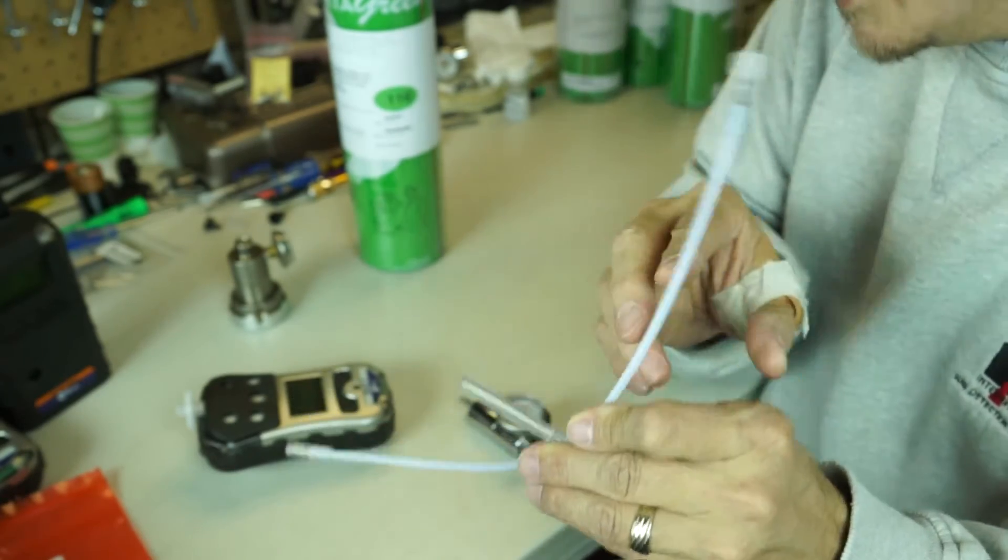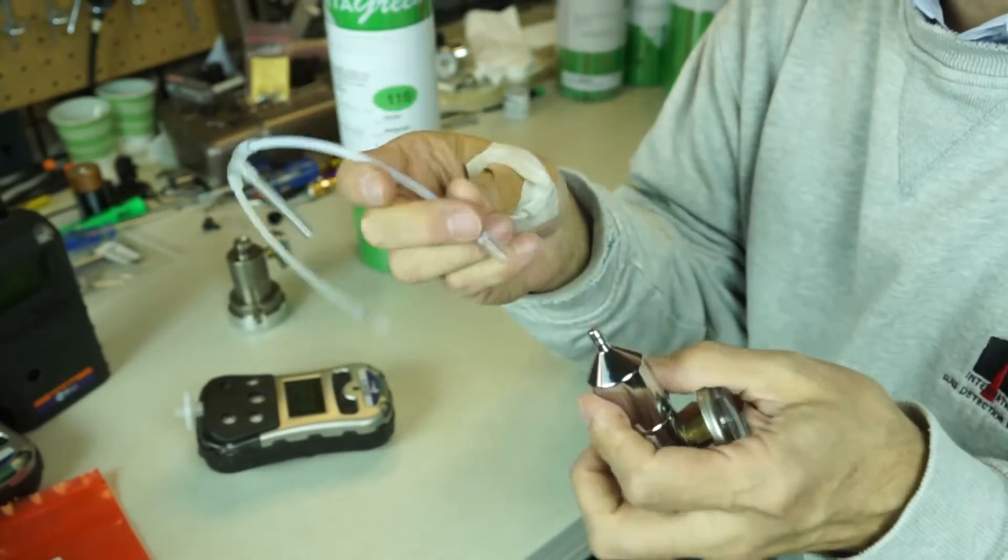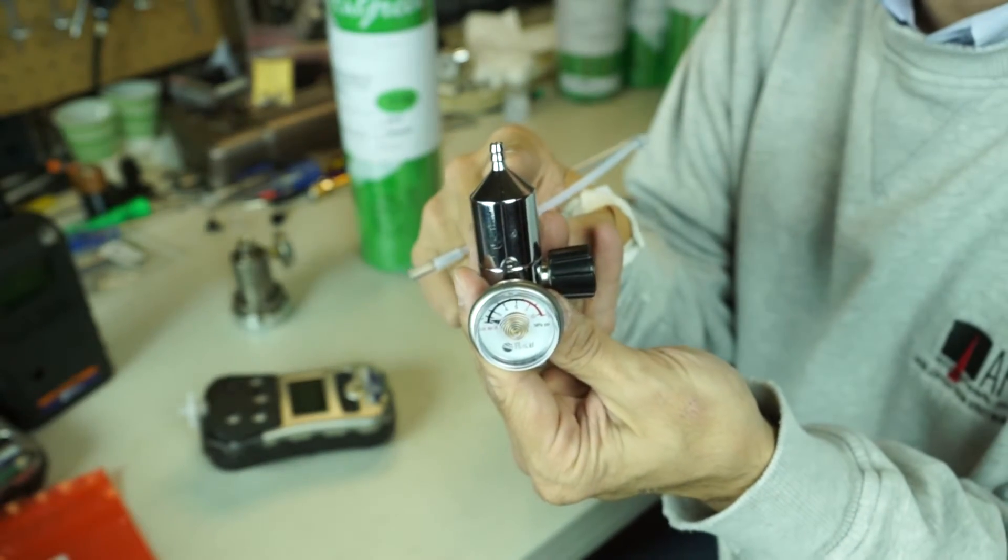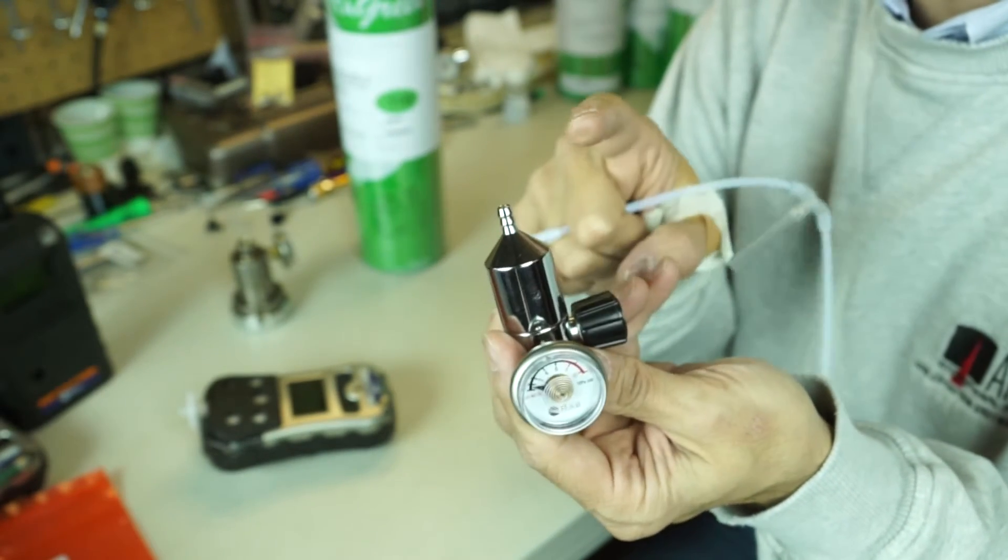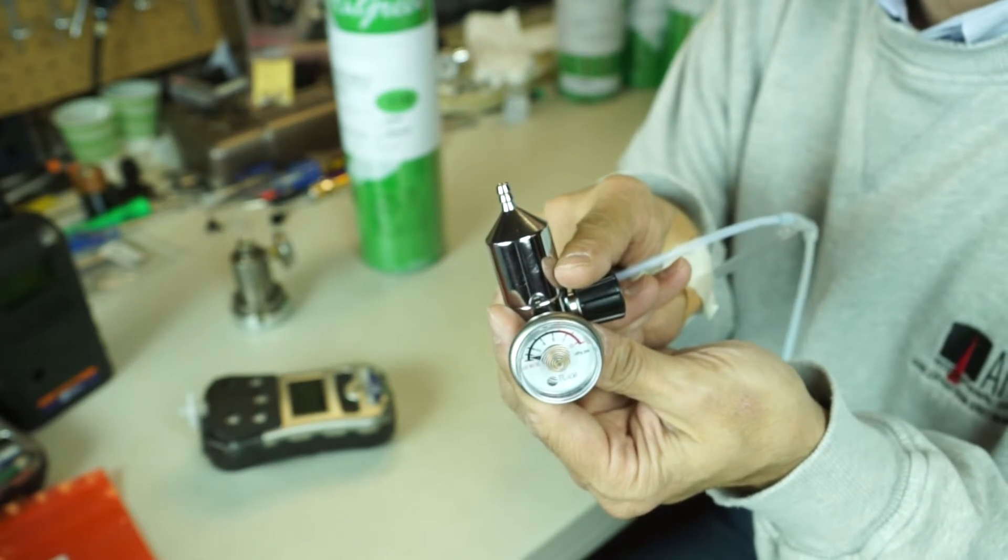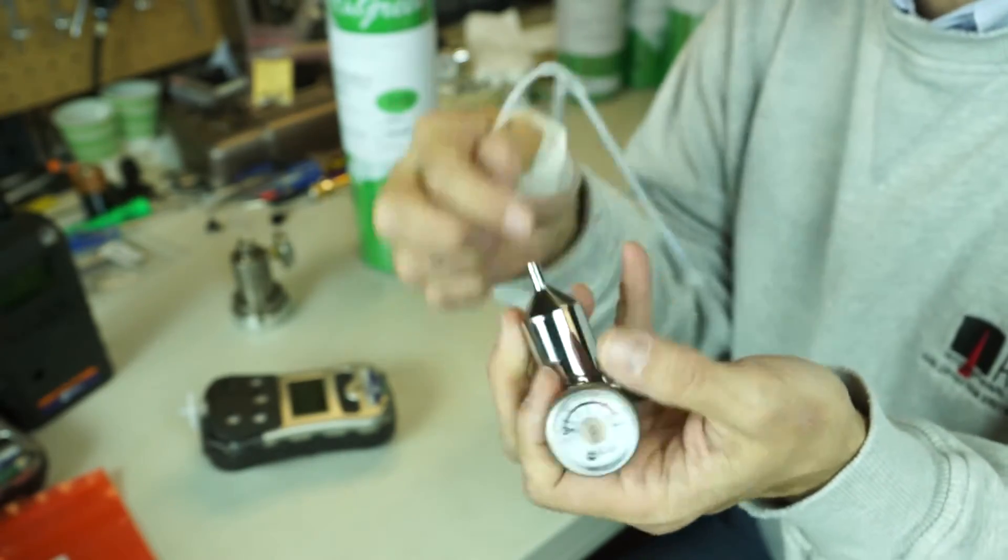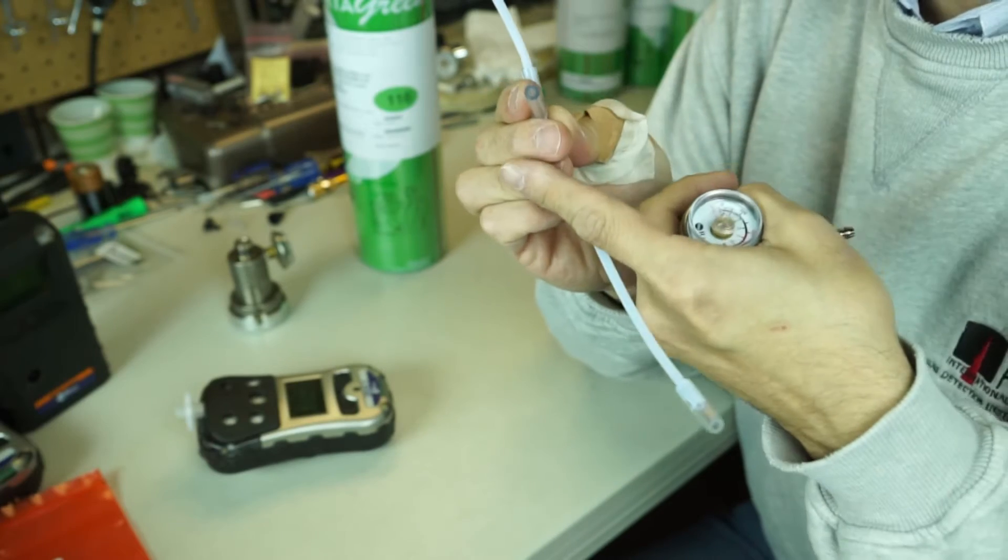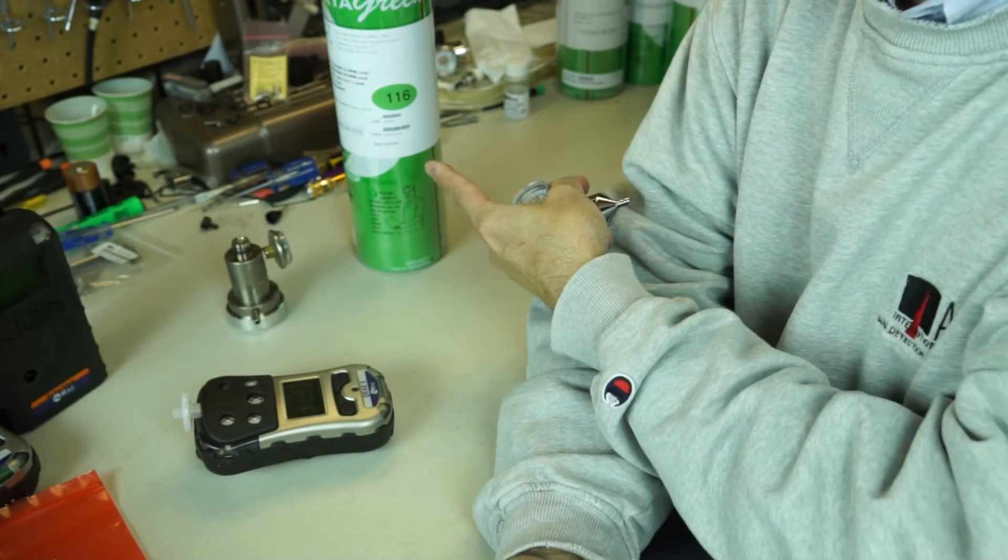So what I'm going to do here is I'm going to go ahead and connect up the instrument or the calibration T to the regulator. This is a fixed flow regulator from Ray Systems. And the key thing here is you got to make sure you use a regulator that has a flow that's greater than the draw of your instrument. If this regulator doesn't have a draw or a flow greater than the instrument, well then the third leg of the T is going to act as a dilution probe, and that'll reduce the gas concentration that we have in the cylinder.